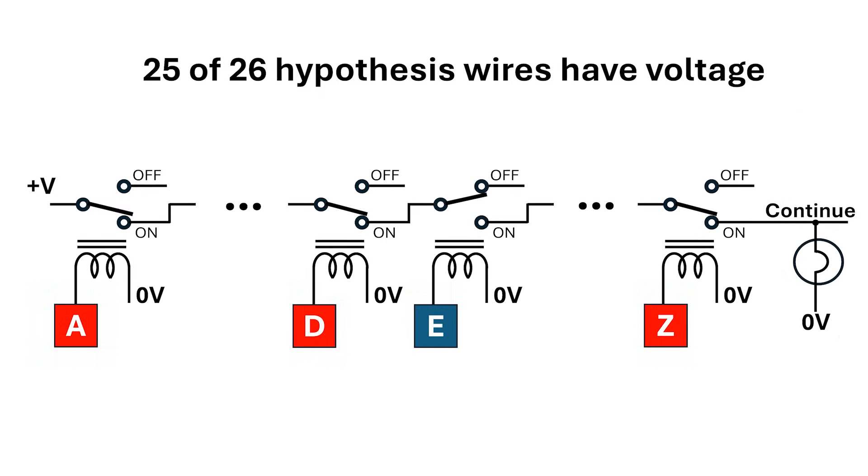If all the relays but E were energized, then the signal would stop at E, and again the machine would stop. But, if all hypothesis wires of the key character carried a voltage, then all relays would be energized, and the voltage would get through to the continue signal, and the machine would move on to the next rotor setting.